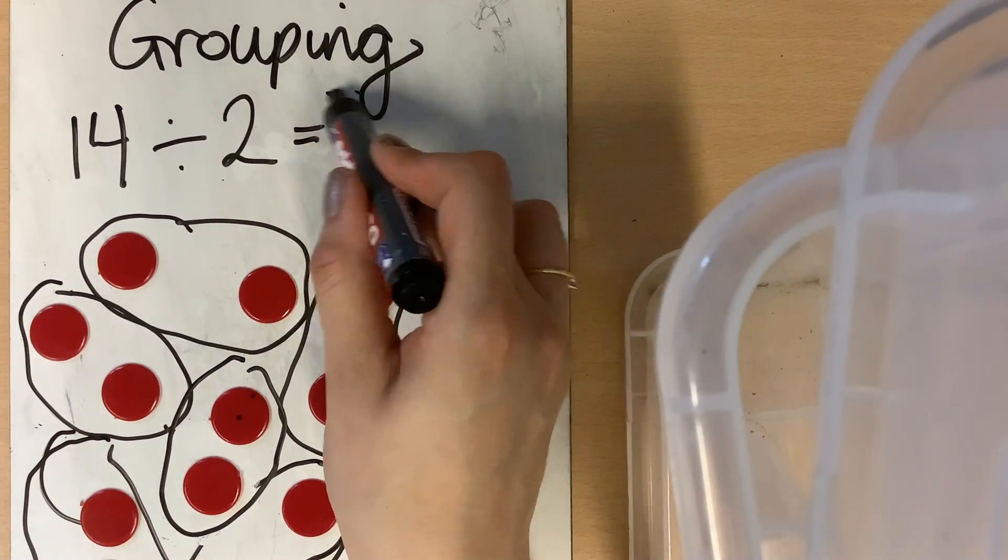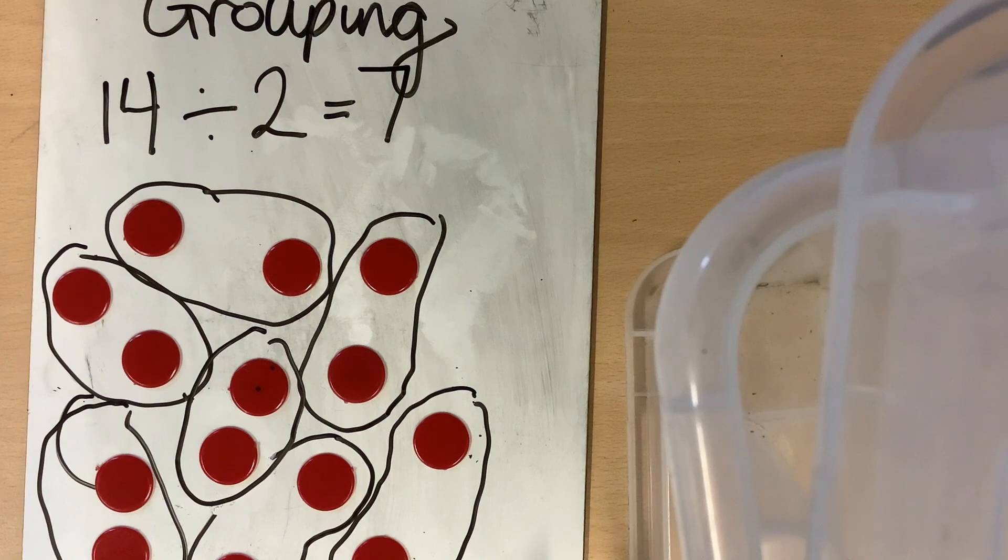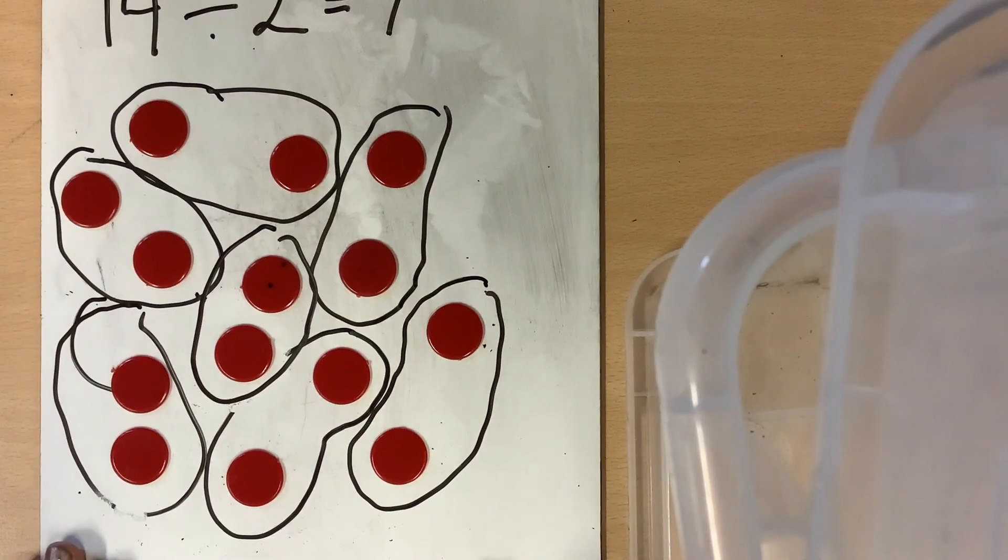So, 14 split into groups of two gives me seven groups.